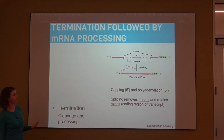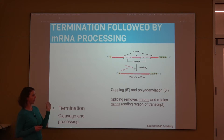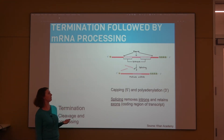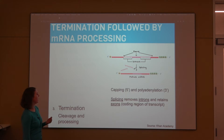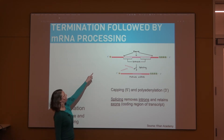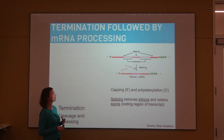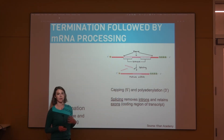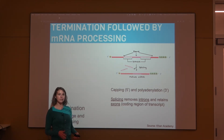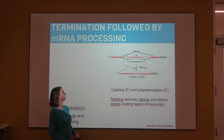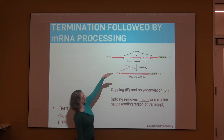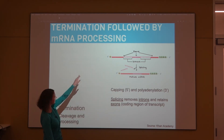With termination for transcription, there's a region at the end of the gene that signals it's time to stop transcription. Then we have RNA processing, which includes adding a 5' cap and a poly-A tail. These are features of the mature messenger RNA that help keep it protected as it goes out into the cytoplasm. DNA stays in the nucleus where it's protected, but the RNA has to go out into the cytoplasm — into the war zone — to create the proteins.